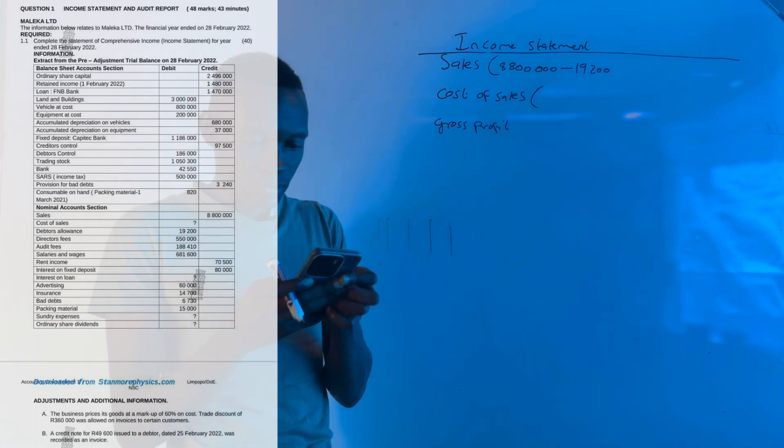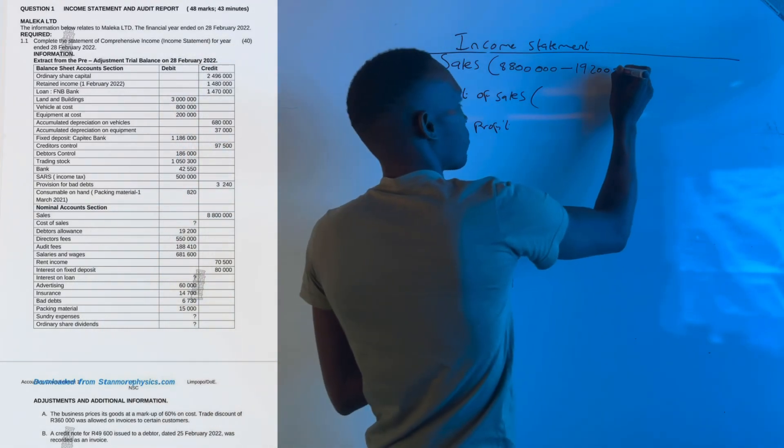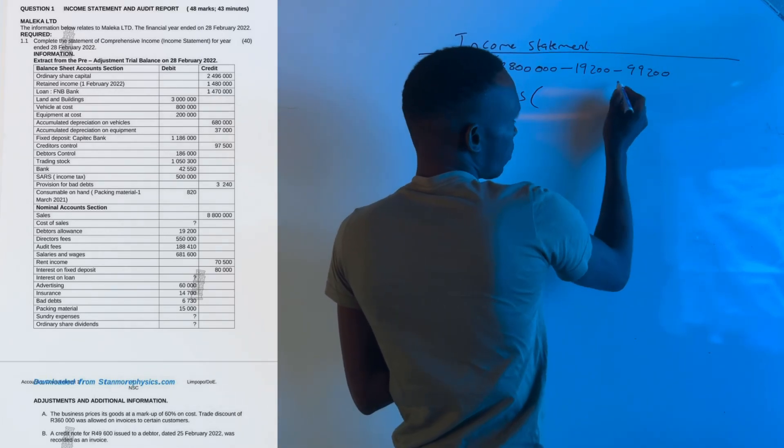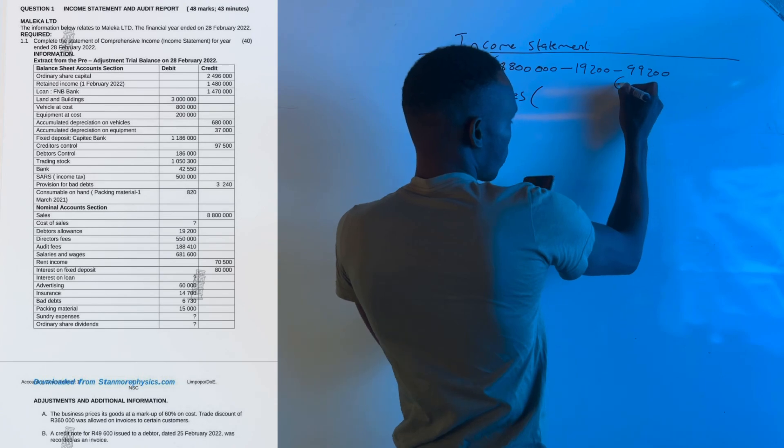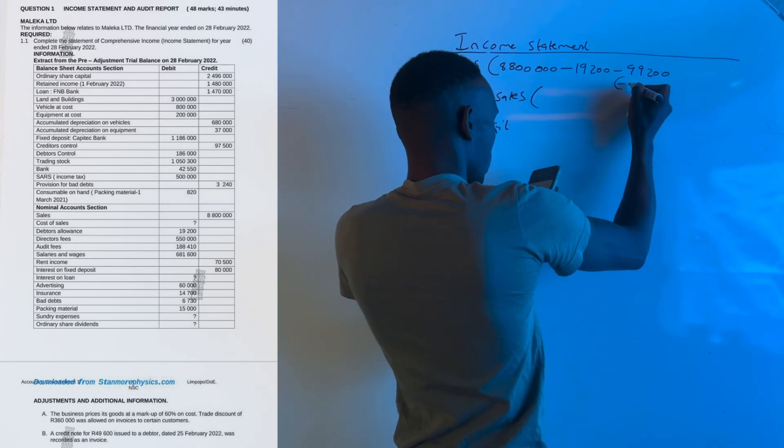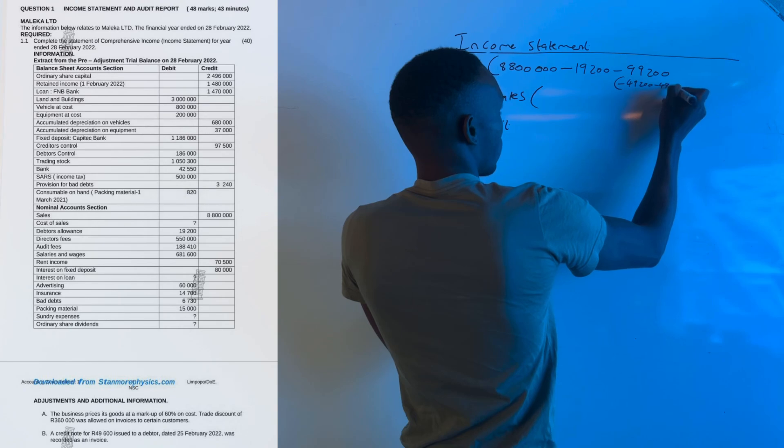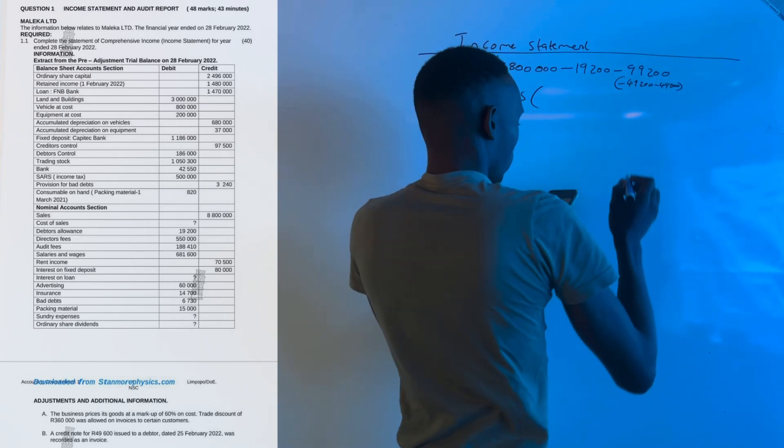49,600 times 2 gives us 99,200. Then we subtract 99,200. Or instead, you can just subtract it twice: 49,600 minus another 49,600.